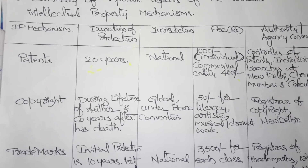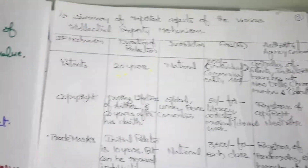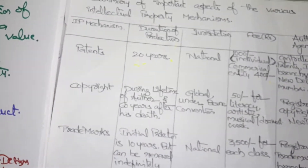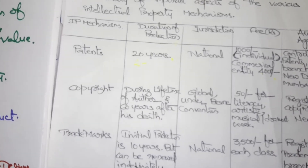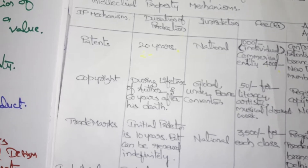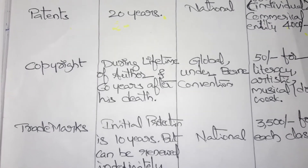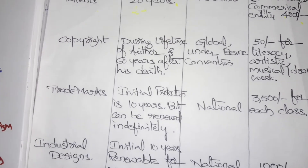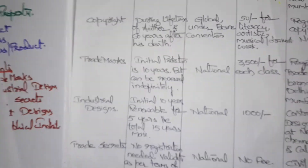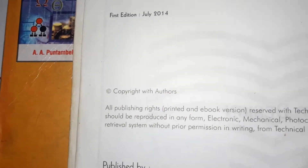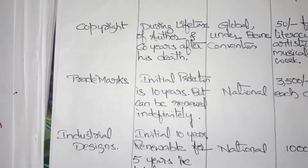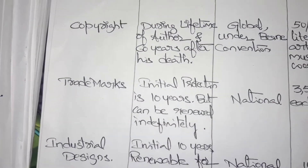Next is copyright, which means the right to copy. The duration of protection is during the lifetime of the author. After the author's death, the copyright remains valid for 60 years. For example, a book's copyright is reserved during the author's lifetime, and for 60 years after their death.